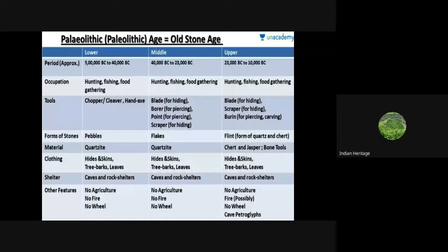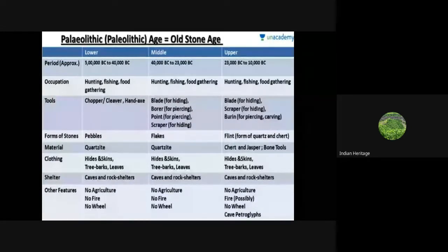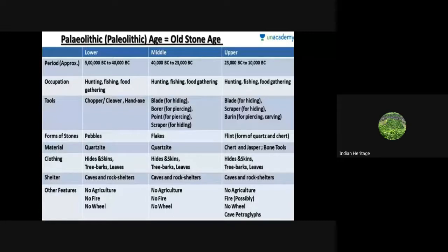Moving toward the Paleolithic age, or Old Stone Age — lower Paleolithic, middle Paleolithic, and upper Paleolithic — we know this period from approximately 500,000 BC to 40,000 BC; 40,000 BC to 23,000 BC; and 23,000 to 10,000 BC. Most important for art and architecture are the tools. In the lower Paleolithic age, choppers, cleavers, and hand axes were used. Blades, borers, points, and scrapers appeared in later periods, with more developed tools in the upper Paleolithic age.